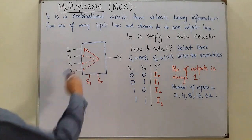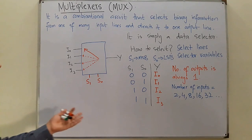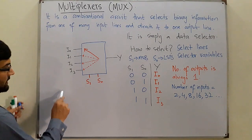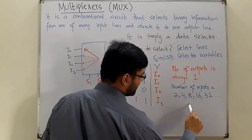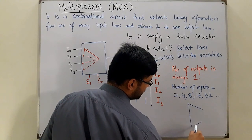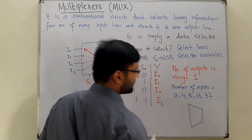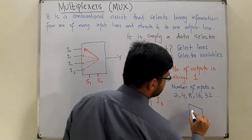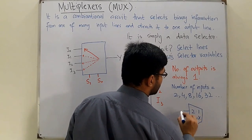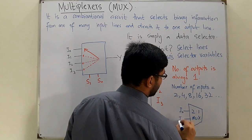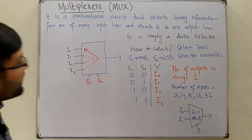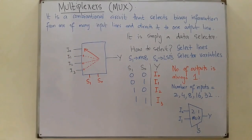The multiplexer is represented by a box: inputs on the left, output on the right, and select variables coming from the bottom. It can also be drawn as a trapezoid shape — tilted on both sides. For a 2×1 MUX, we have two inputs I₀ and I₁, a single output Y, and one select line S.